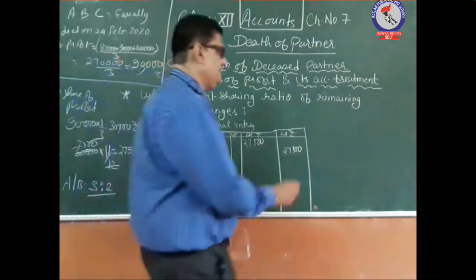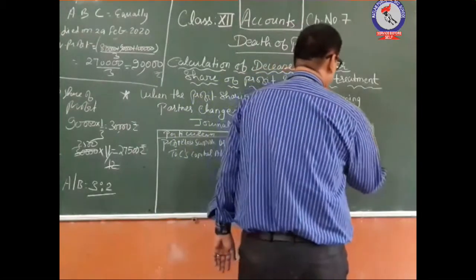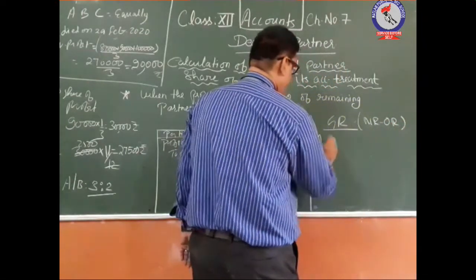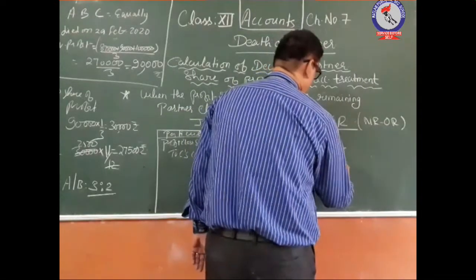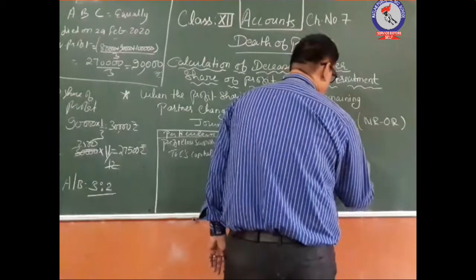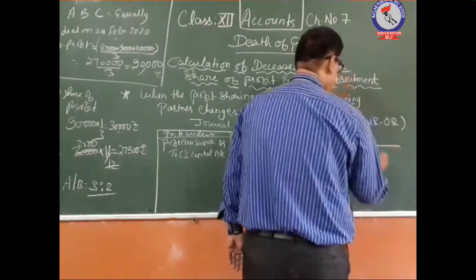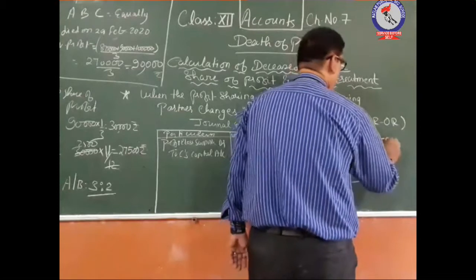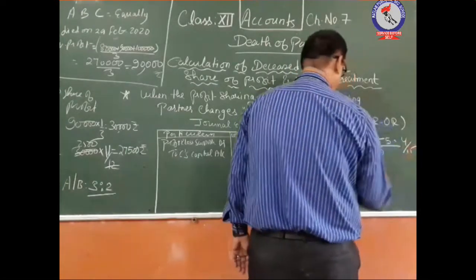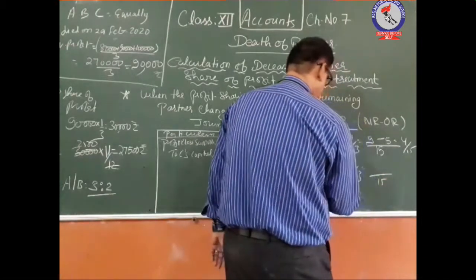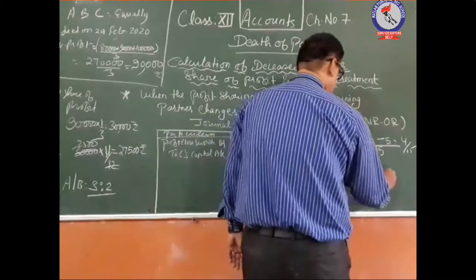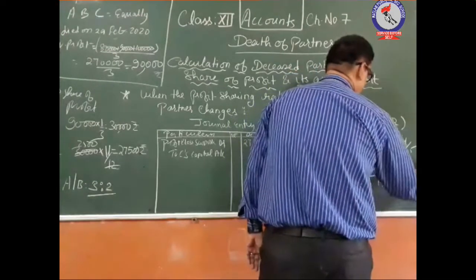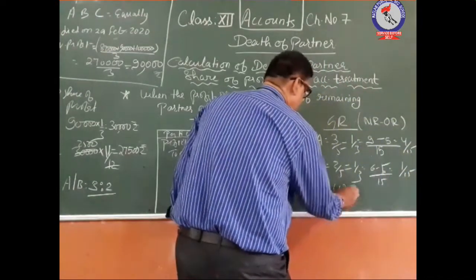The gaining ratio is new ratio minus old ratio. For A and B: new ratio is 3/5 and 2/5; old ratio is 1/3 and 1/3. For A: 3/5 − 1/3 = 9/15 − 5/15 = 4/15. For B: 2/5 − 1/3 = 6/15 − 5/15 = 1/15. Therefore, the gaining ratio is 4:1.